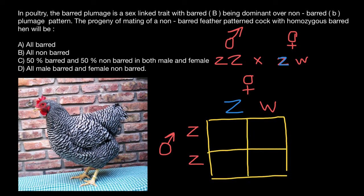By the way, it is said that the female or hen is homozygous, but actually, because the female specifies the sex of the progeny, we call her hemizygous instead of homozygous, because she has two different sex chromosomes.